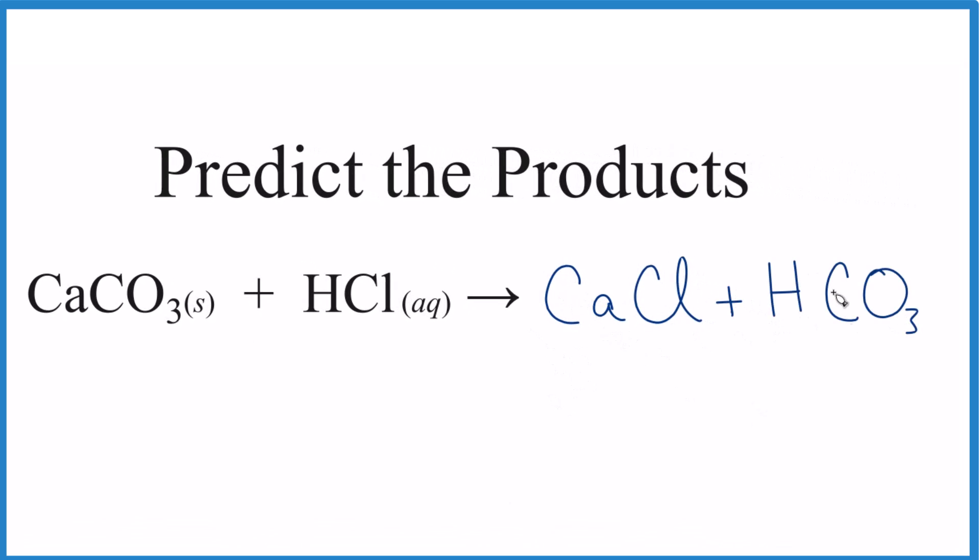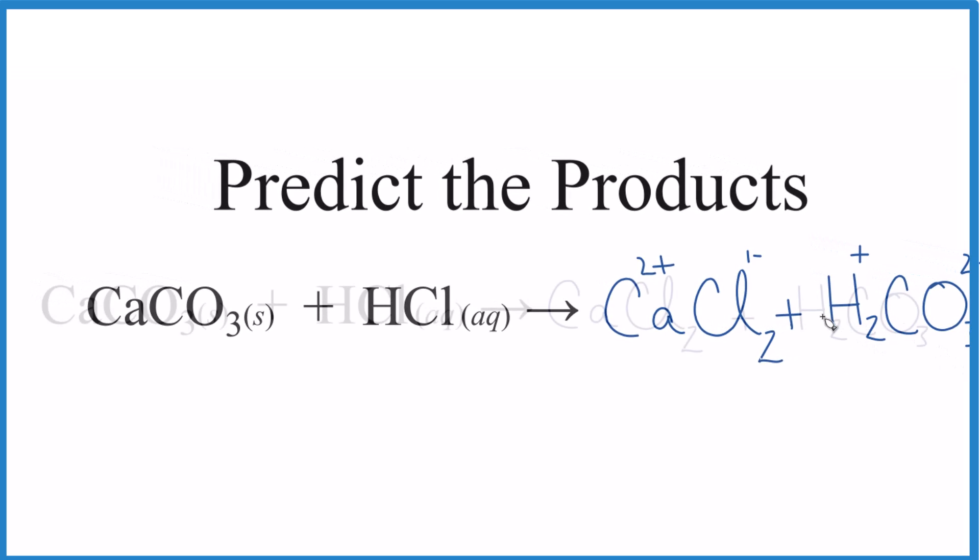But we still need to balance the charges here. Calcium is 2 plus. Chloride ion is 1 minus, so we need two of those. That's going to be CaCl2. And the carbonate, the whole thing here is 2 minus. Hydrogen is 1 plus, so we're going to put two of those there. Now these are the correct products.